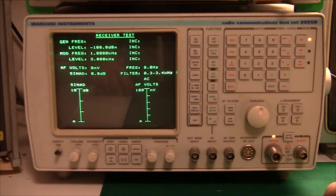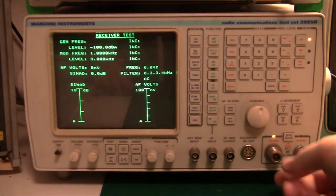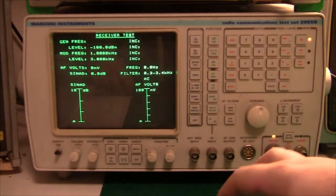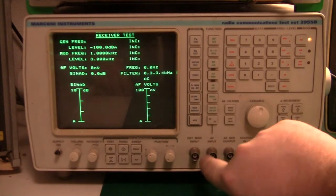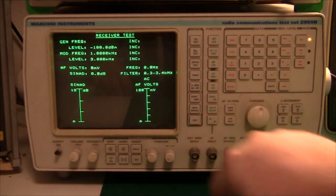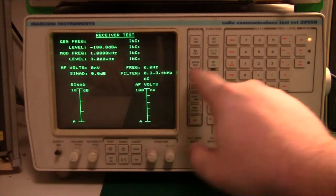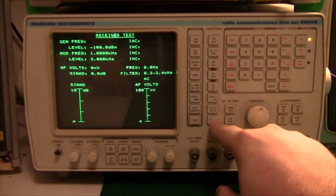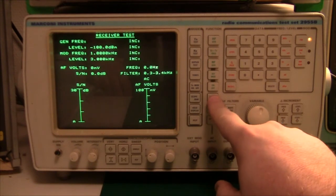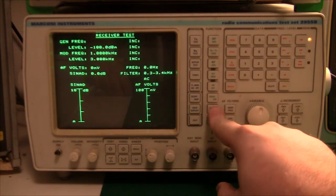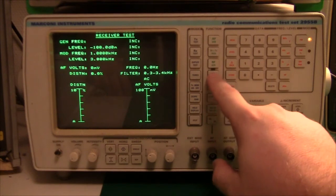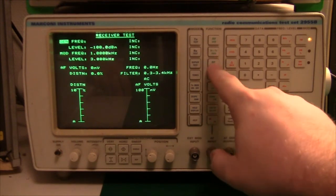We can also test the receiver. And in this mode, we are sending out RF signals from this machine using the same connectors, and then through the radio receiver and back into this connector here. So using this method, we can test stuff like signal noise at different frequencies. We can test SINAD, we can test distortion, we can test different modulation levels.